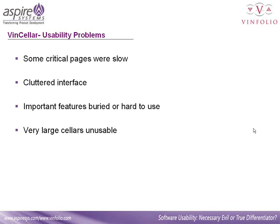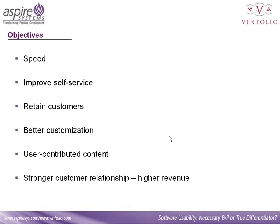We started by identifying what was wrong. Pages were slow, the interface wasn't intuitive, and things we wanted people to use were not available in easy-to-reach places. For people with very large cellars, the performance just wasn't there — it was unusable for a lot of our main customers. So we did more research, met people, got feedback, and went through our case management system and database to look at error paths and bottlenecks, trying to find where the system was performing poorly from both the back end and the front end.